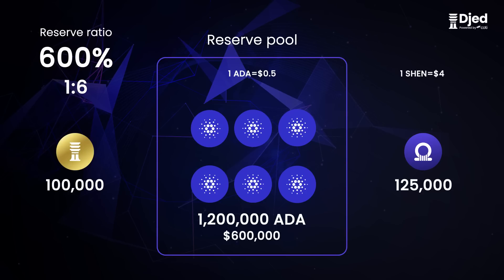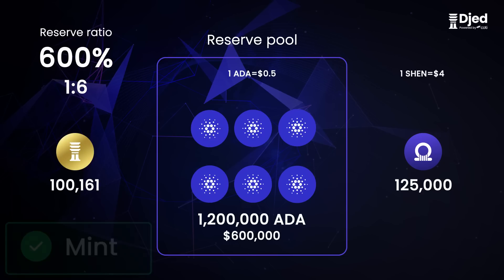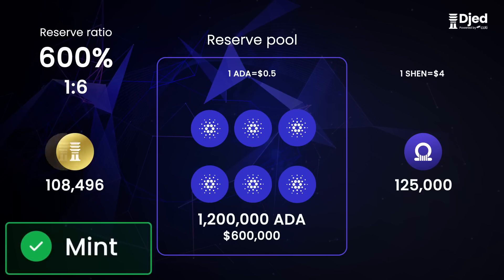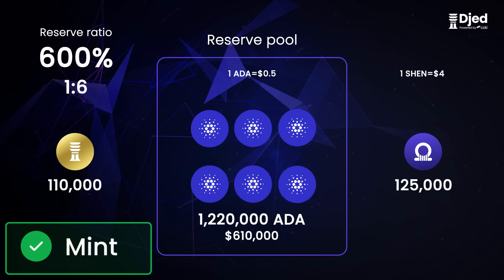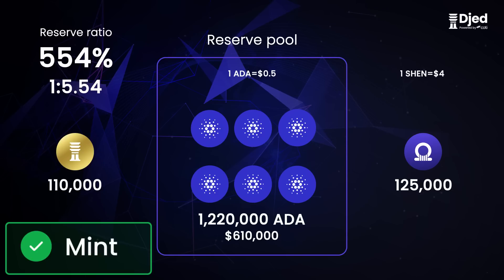Since we have a healthy ratio of 600%, let's mint an extra 10,000 JED. This makes it a total of 110,000 JED minted. This means that we added 20,000 ADA to the pool, so now the reserve has 1.22 million ADA. This changes the ratio to 554%, because by minting more JED, the reserve ratio is lowered.